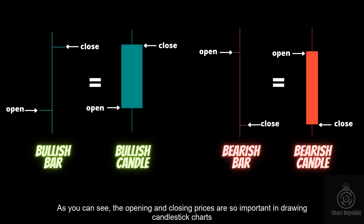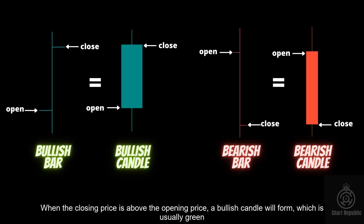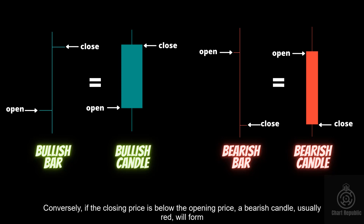As you can see, the opening and closing prices are very important in drawing candlestick charts. When the closing price is above the opening price, a bullish candle will form, which is usually green. Conversely, if the closing price is below the opening price, a bearish candle, usually red, will form.